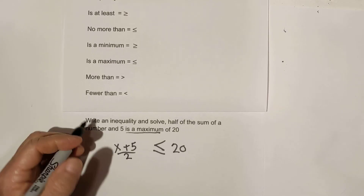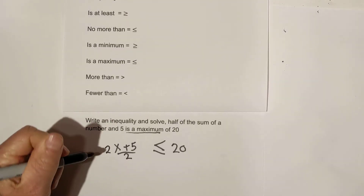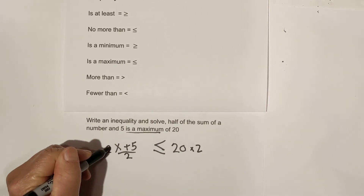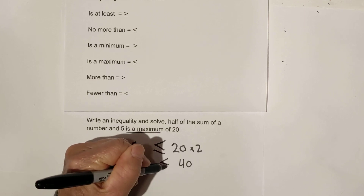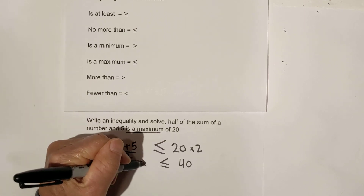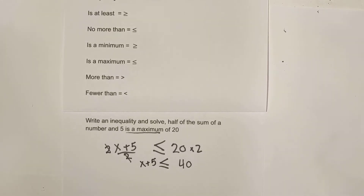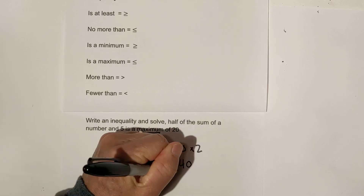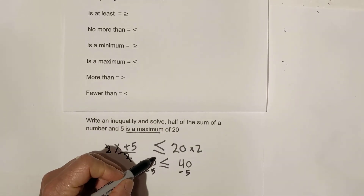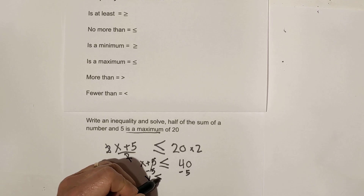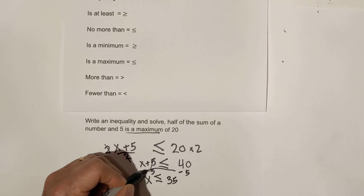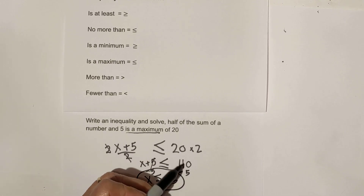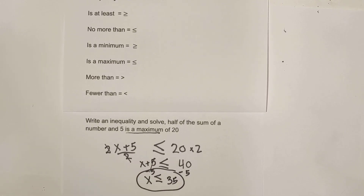How do we solve this? Let's first get rid of this two by multiplying by two. These twos cancel. This becomes: x plus five is less than or equal to 40. Now let's get x by itself by subtracting five. These cancel. x is less than or equal to 35. Remember, when you have signs, take the sign of the larger number.